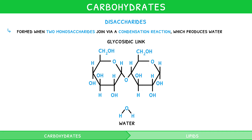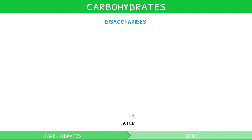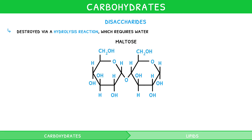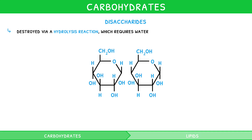Disaccharides can also be destroyed via hydrolysis reactions, which require water. As discussed previously, these are catabolic reactions. To draw this reaction, start by drawing a molecule of maltose along with a molecule of water. The glycosidic link then breaks and the water splits into a hydroxyl and hydrogen group, which join to either part of the maltose. This forms two distinct glucose molecules.